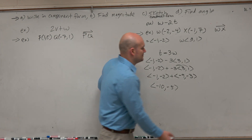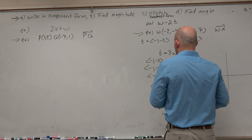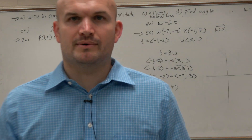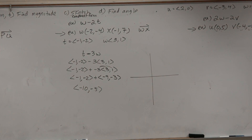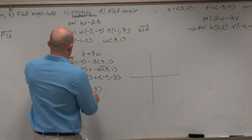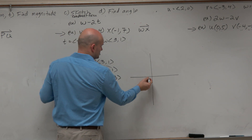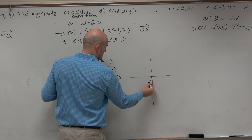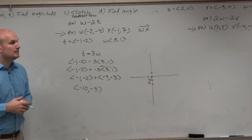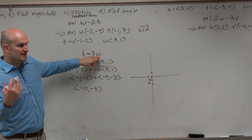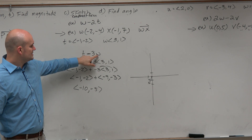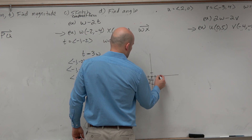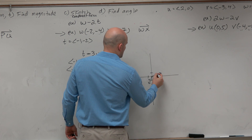So that's the resultant vector. Now, how does this look on a graph? Let's go ahead and graph t. t is negative 1, negative 2. Now let's go ahead and graph w, which in this case is going to be 3, comma 1.